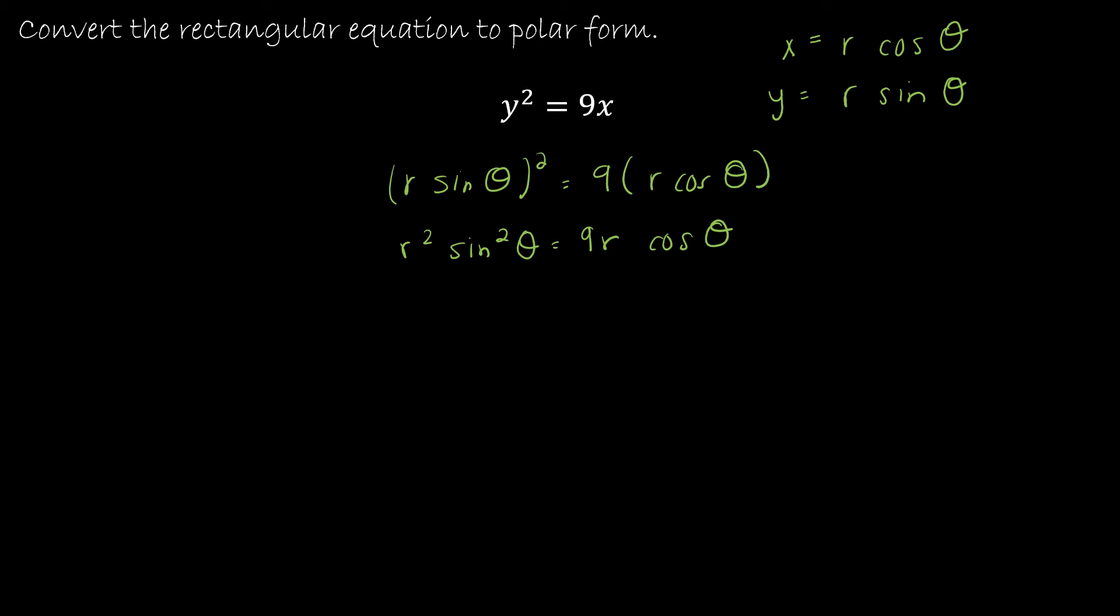So I might start here by taking each side divided by r, because obviously I have an r on each side. And that's going to get rid of one of the r's in my r squared, and also the r on the right side. So now I have r sine squared theta is equal to 9 cosine theta. So I'm closer, but I still don't have r by itself. So I'm going to take each side now divided by sine squared theta.